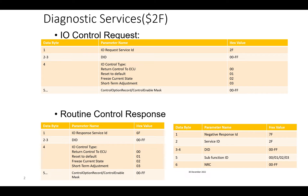After the sub-function, we have the Control Option Record and Control Enable Mask. For a short-term adjustment, we provide the target value for the input/output signal or internal parameter. The enable mask allows us to control only specific signals out of a larger set of configured signals.